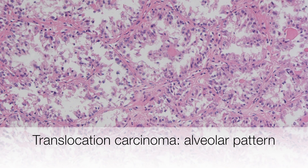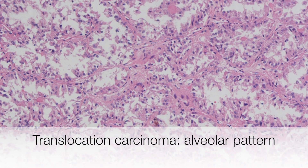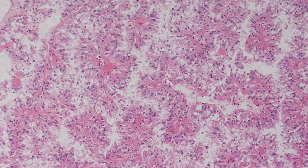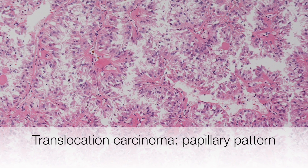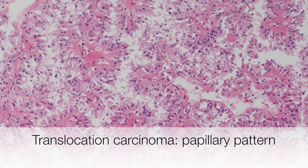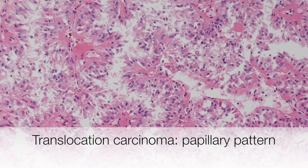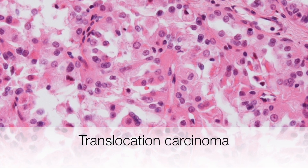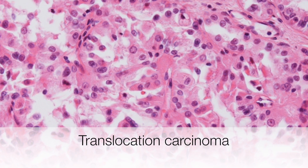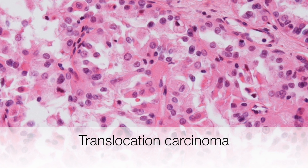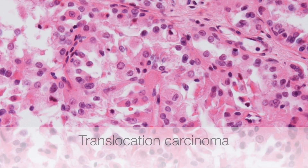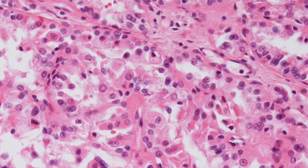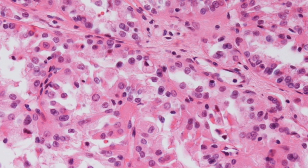This area of the translocation carcinoma shows an alveolar pattern, and in this area of the tumour the architecture is rather papillary. At higher power, the nuclei do not look particularly pleomorphic, and the surrounding cytoplasm is fairly abundant — in areas clear, in other areas pale, and in other areas eosinophilic.